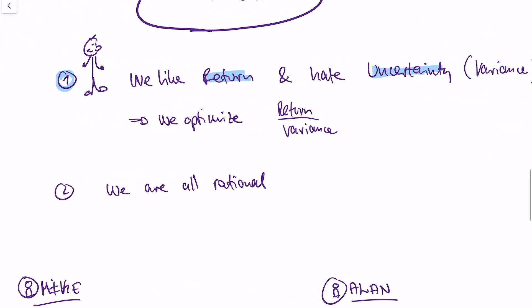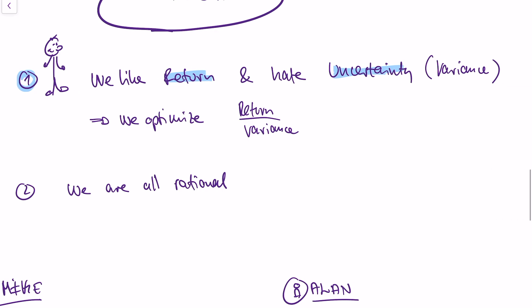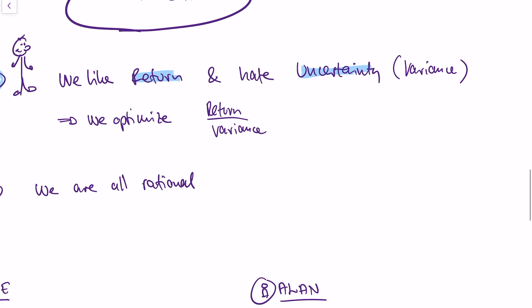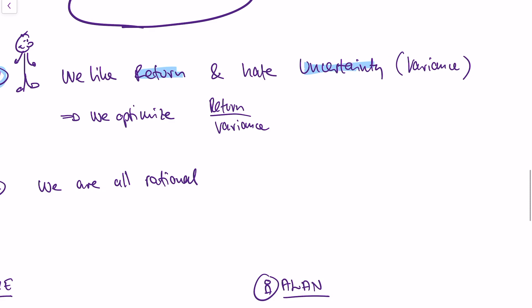People who act this way actually optimize return divided by variance. They want the return to be as high as possible and the variance to be as low as possible. This simple fraction captures our behavioral assumptions.